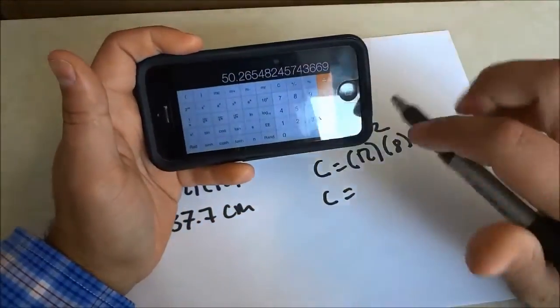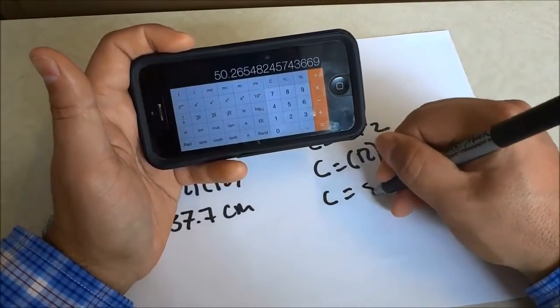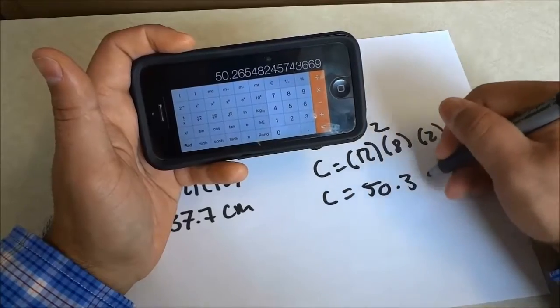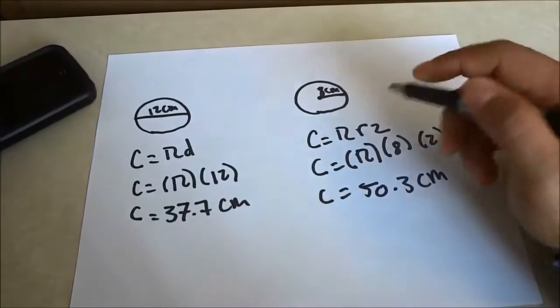And that gives me 50.26 centimeters. So I'm just going to round it up to 50.3 centimeters. And that is the circumference of this circle right here.